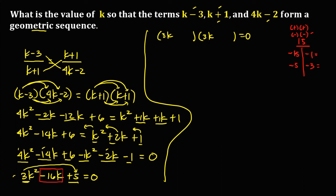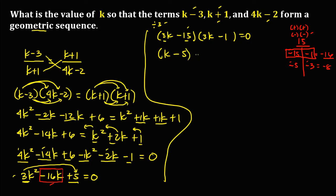Adding the factor pairs: negative 15 plus negative 1 equals negative 16, and negative 5 plus negative 3 equals negative 8. Since the middle term is negative 16, we use negative 15 and negative 1. We reduce: 3 and negative 15 are both divisible by 3, giving k minus 5. So the factors are (k minus 5) times (3k minus 1) equals 0.